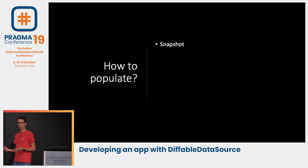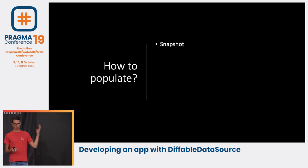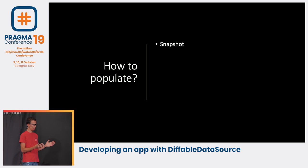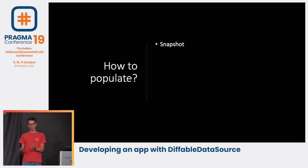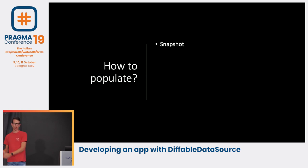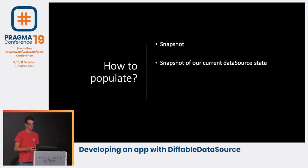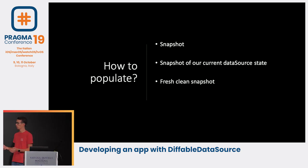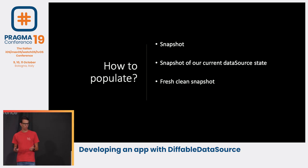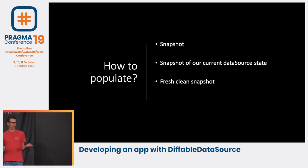To populate the data source, Apple introduced snapshots. A snapshot is similar to snapshot testing — we take a snapshot of the current collection view state, manipulate it, then apply it to our data source so it can figure out what changed and animate the differences under the hood. We can also start with a clean snapshot: if we don't have one yet, we can initialize a fresh snapshot, mutate it, and give it to our data source.